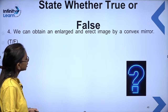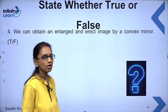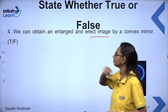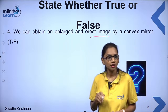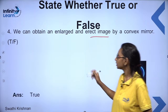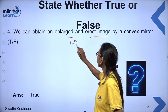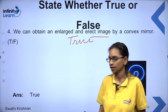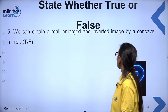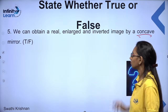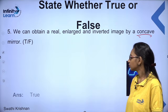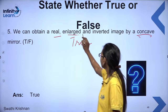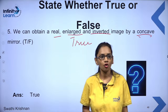We can obtain an enlarged and erect image using a concave mirror — that is true. We can also obtain a real, enlarged, and inverted image using a concave mirror.